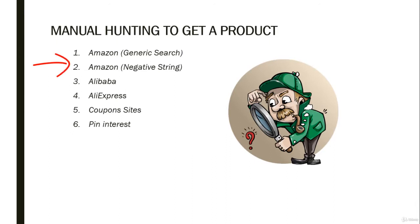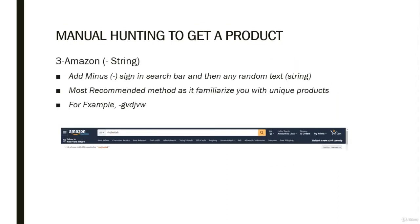Now let's discuss an excellent hack called the negative string, which will make our job easier to hunt the best product. As the name suggests, there is a minus or negative sign and then a few letters. Many successful candidates find their best products through this method. This method will get you an insight into the variety of products listed on Amazon.